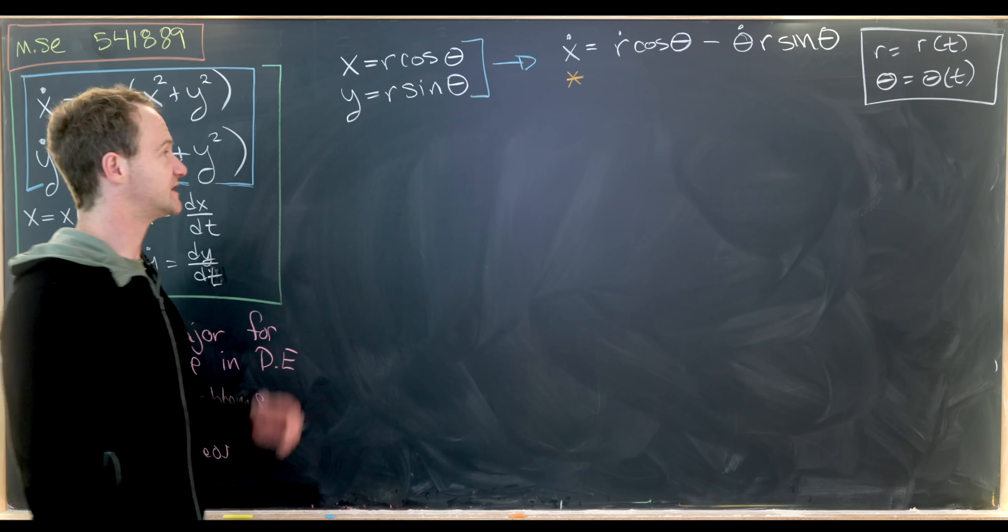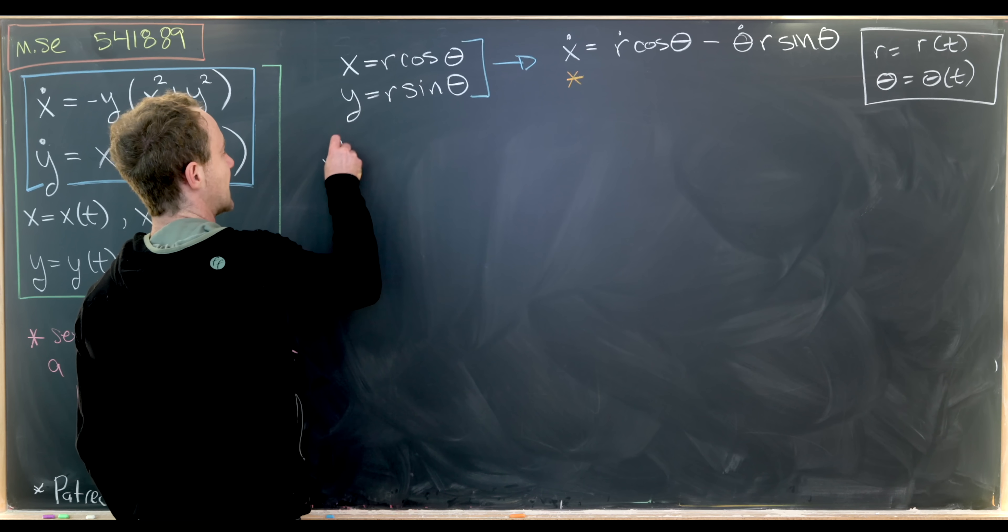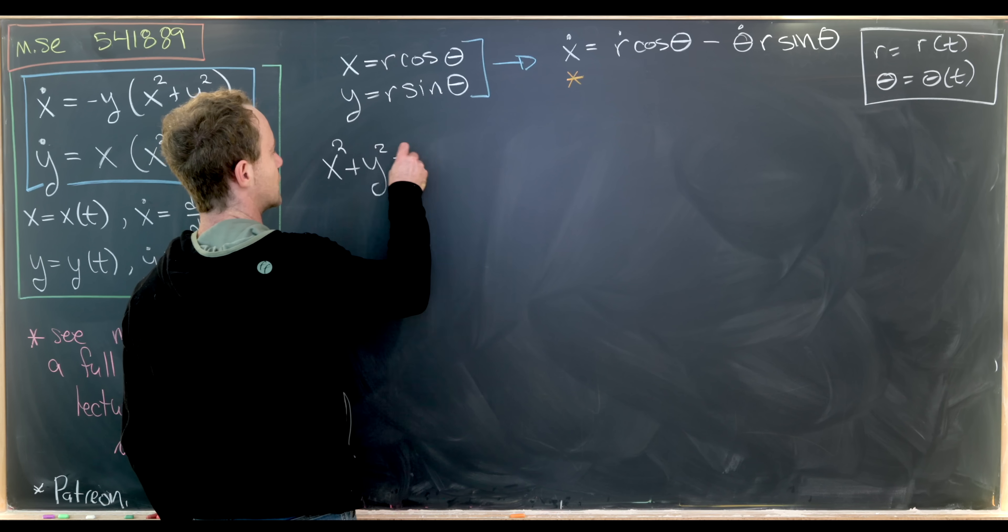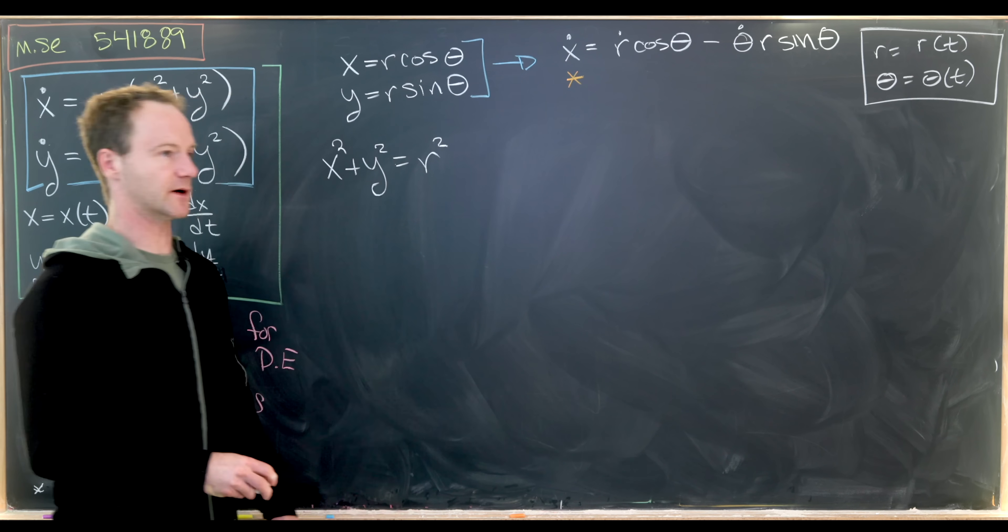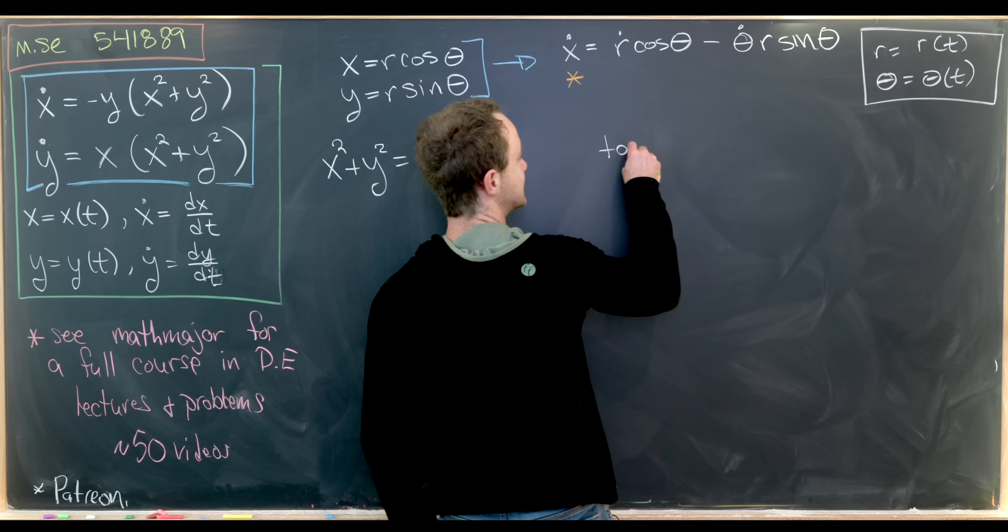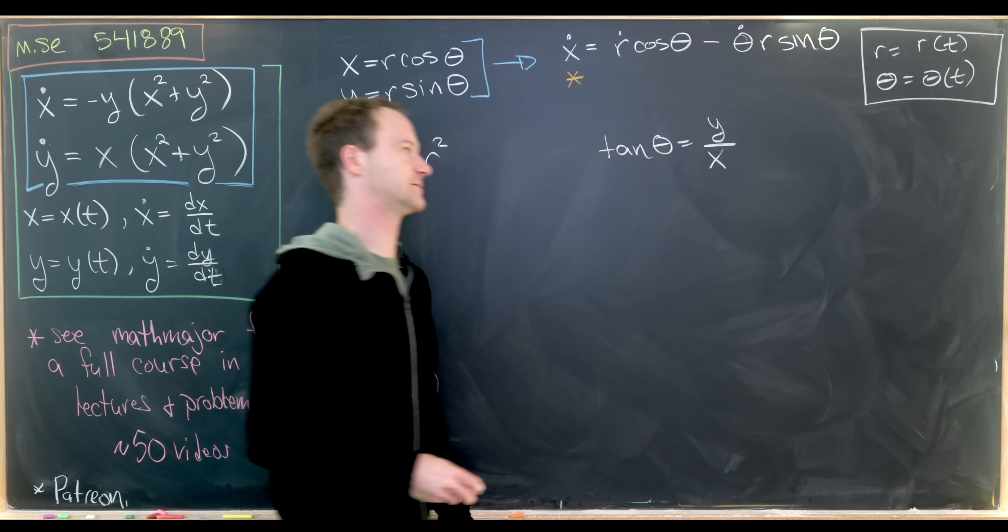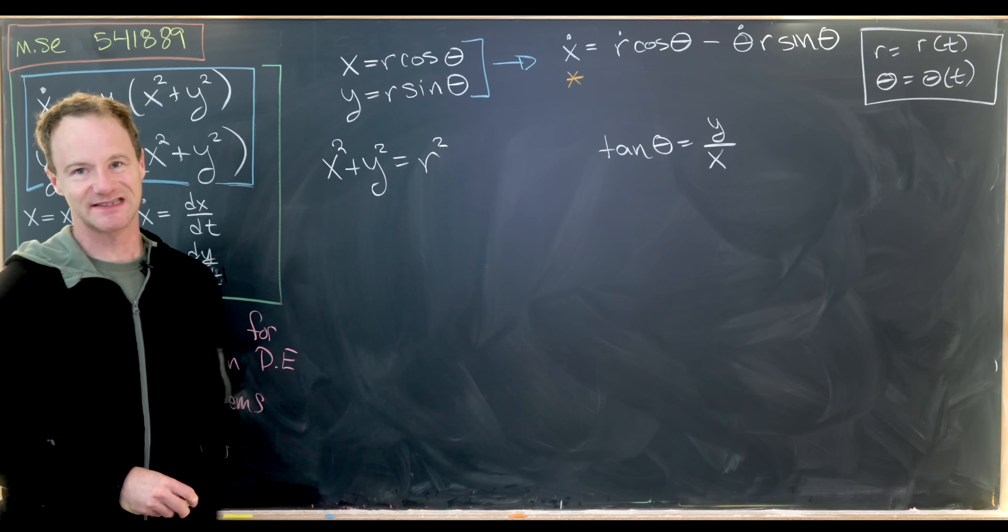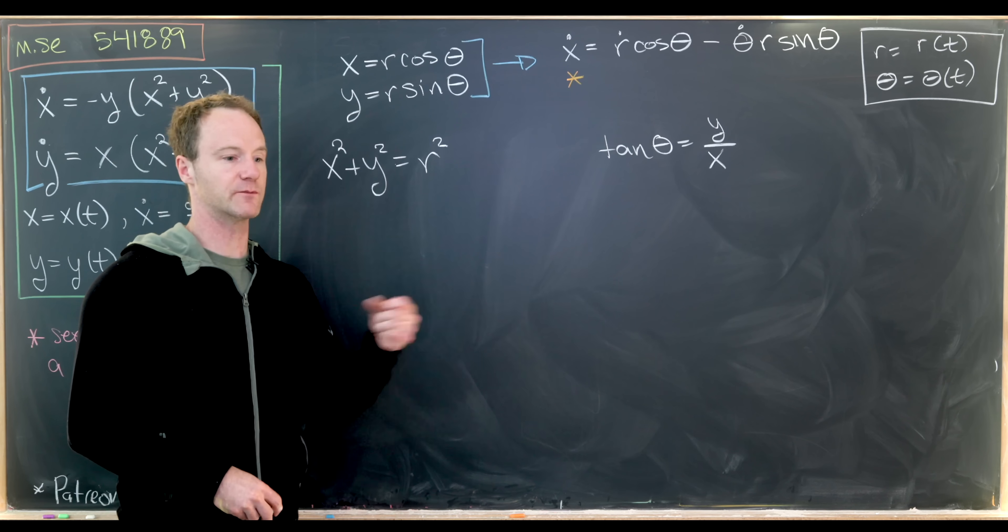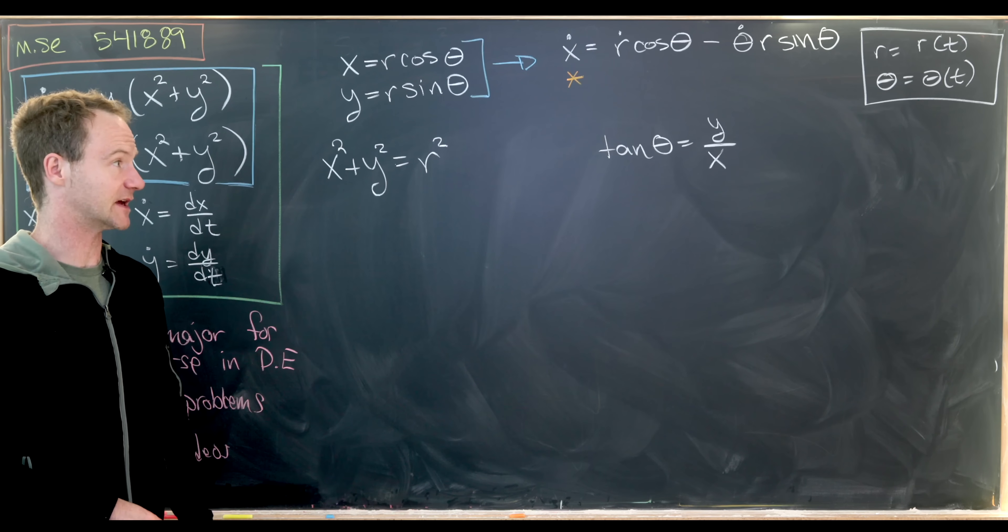Instead, what we will use is the fact that x squared plus y squared is equal to r squared, and the fact that the tangent of θ is equal to y over x. And so that's just standard rules for converting polar coordinates to rectangular coordinates and back again.